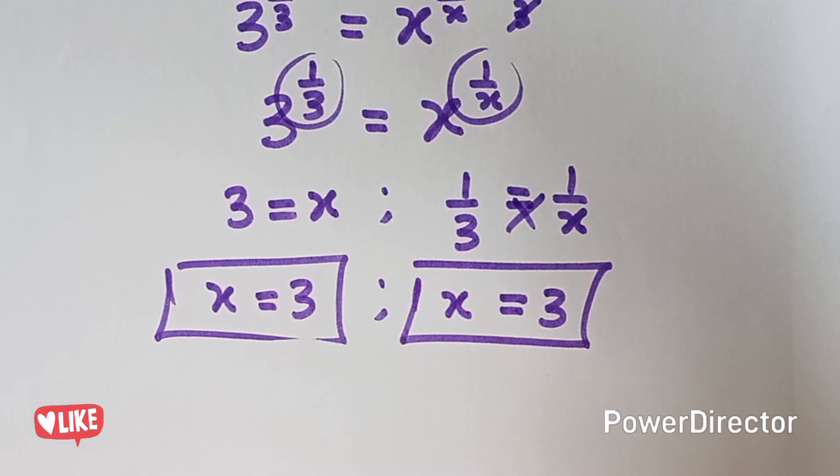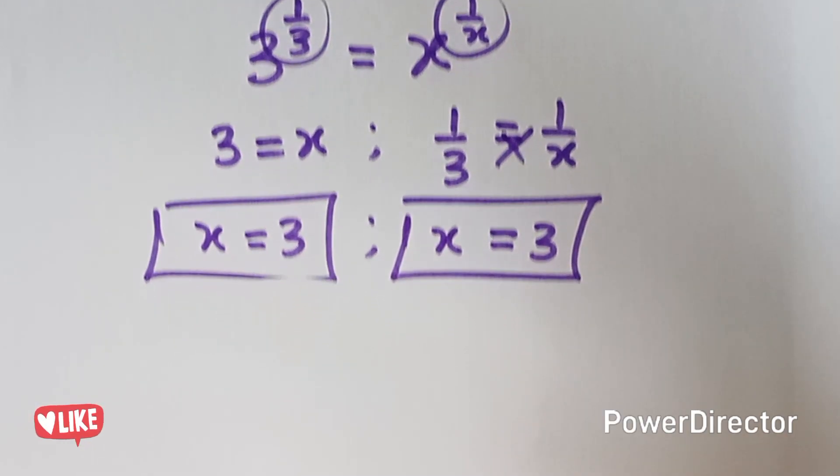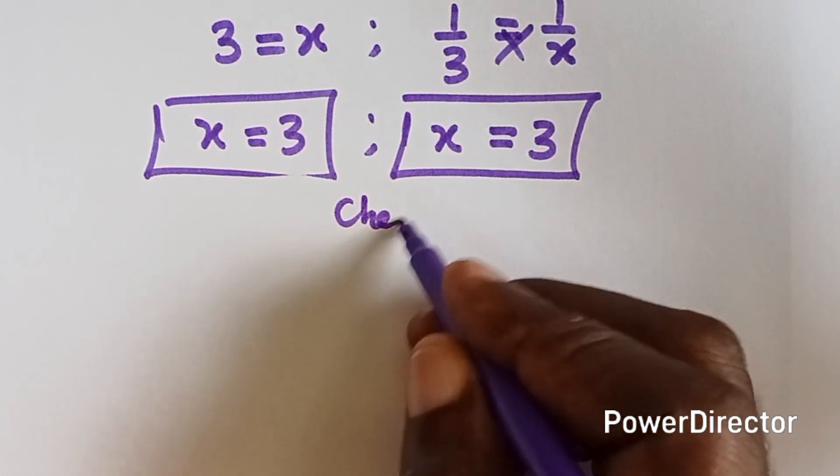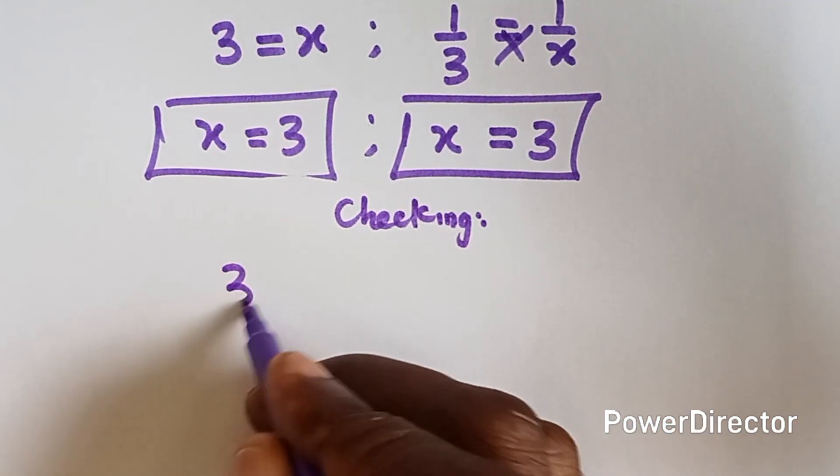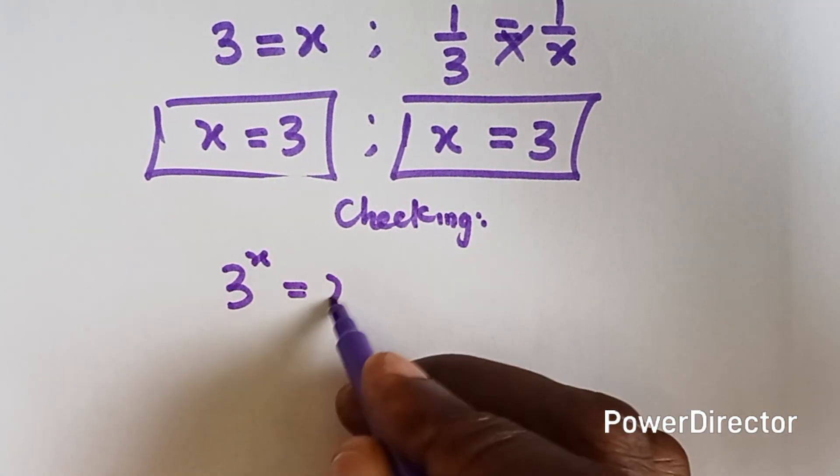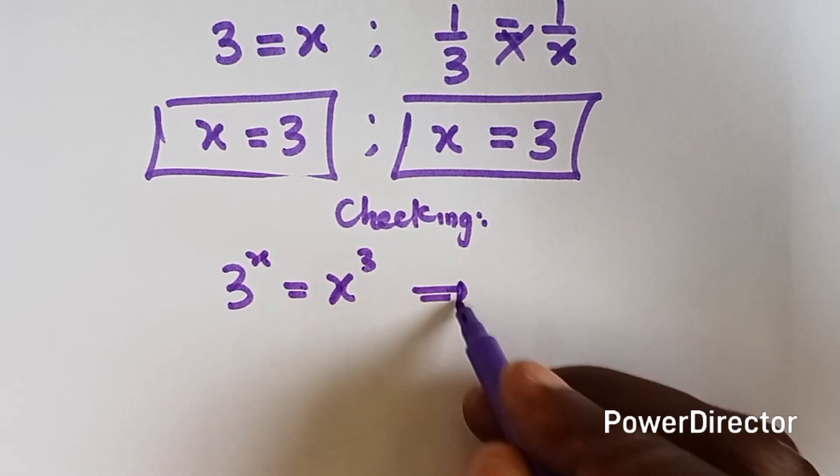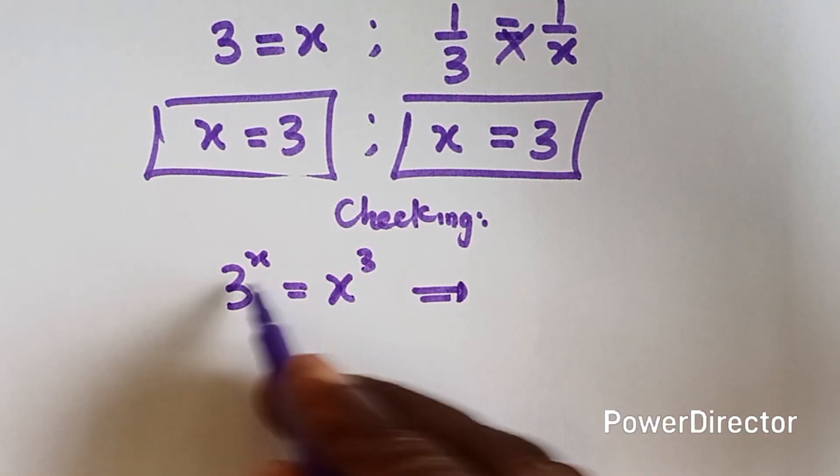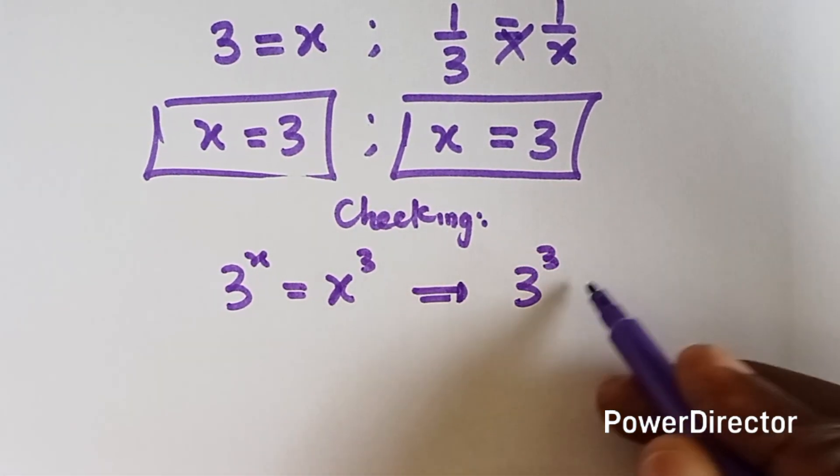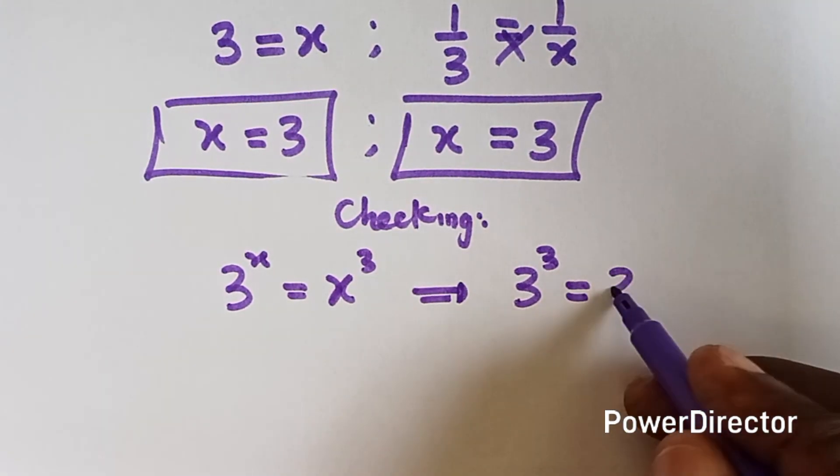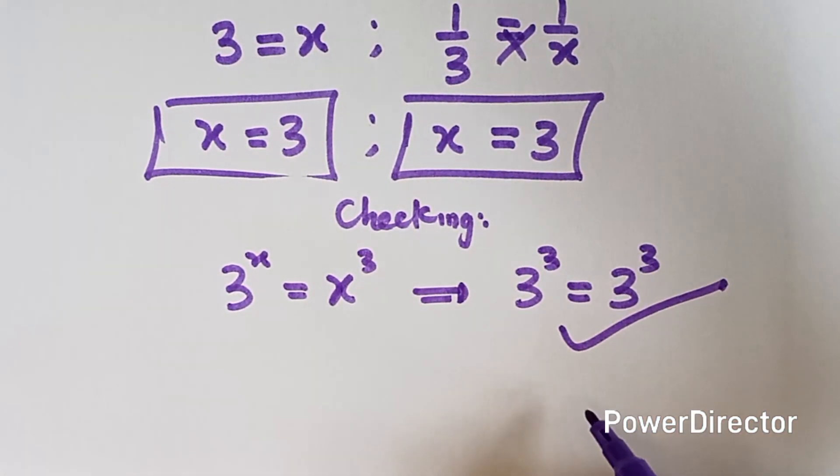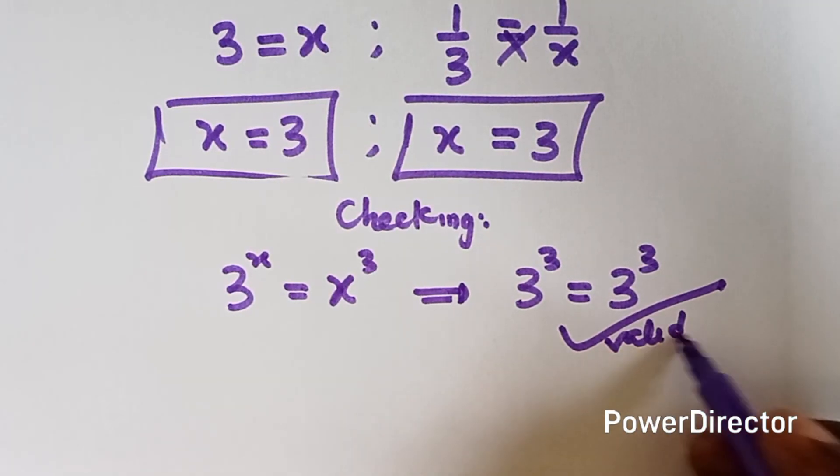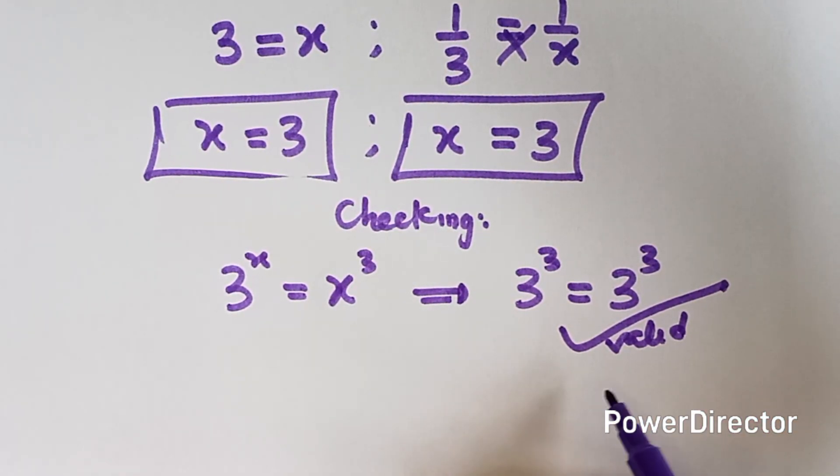Now let's quickly check if we are actually correct. Checking. We have the equation to be 3 raised to power x equals to x raised to power 3. So what is our x? Our x is 3. We have 3 raised to power 3 equals to 3 raised to power 3. And that means that the answer x equals to 3 is a valid answer.